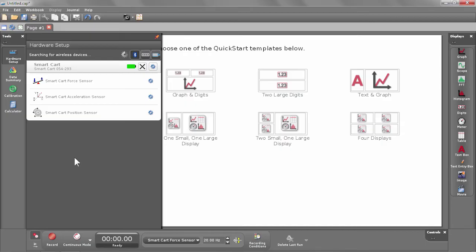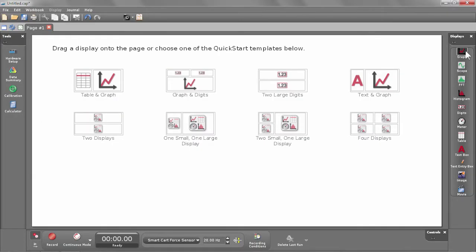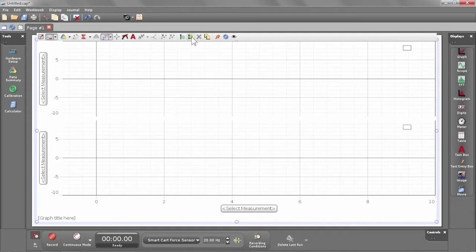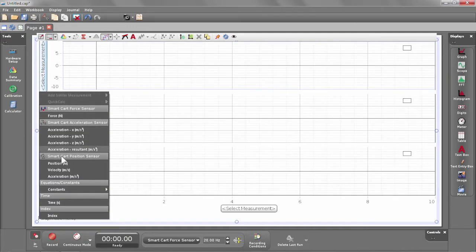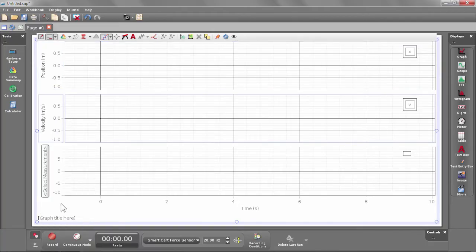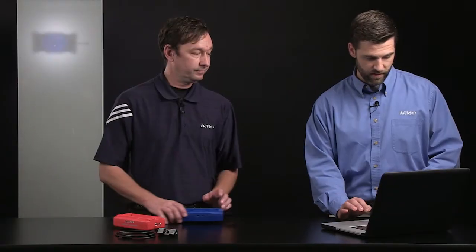Okay, now you see here there are three sensors. These are those three onboard sensors that Brett was mentioning. Once the wireless smart cart is connected, it talks to the software just like any other sensor does. I'm going to create three graph displays and we're going to take a look at the position, velocity, and acceleration measurements made by the cart.